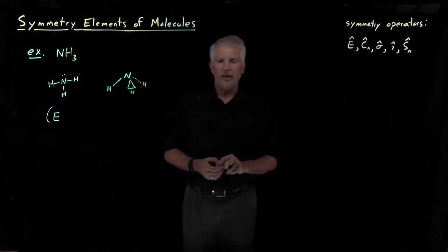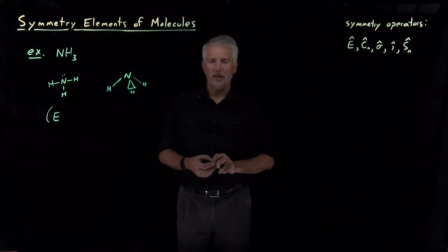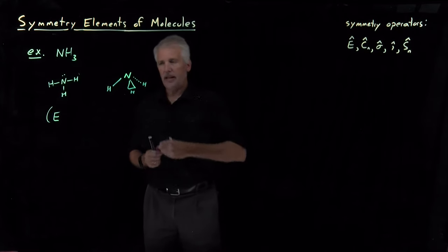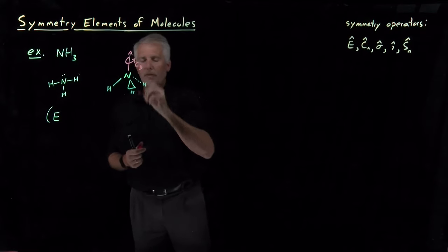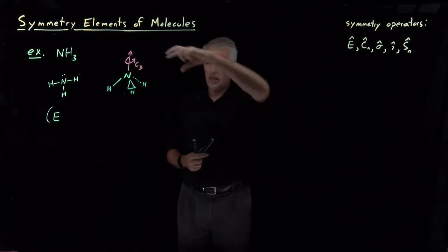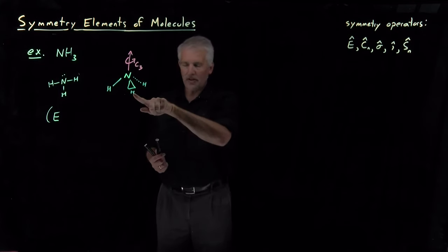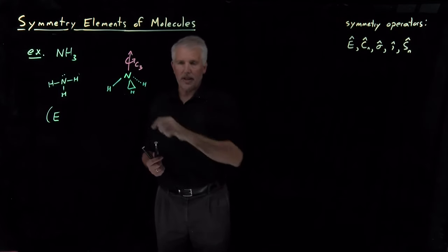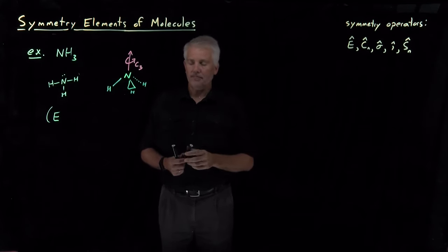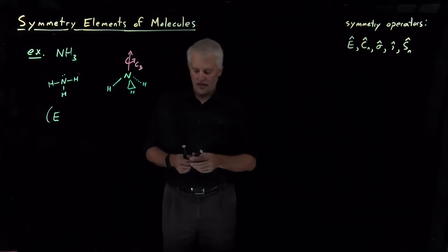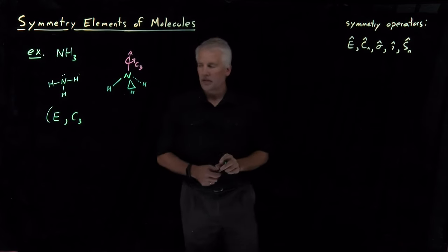Does this molecule have any rotations that leave it unchanged? In fact, it does. The axis that points out the top of this pyramid is a C3 axis, meaning that if I rotate the molecule by a third of a circle around that axis, one of these H's spins onto another H, this one spins onto that one, this one onto that one. So that three-fold rotation is a C3 axis, and the molecule has a C3 rotation symmetry element.